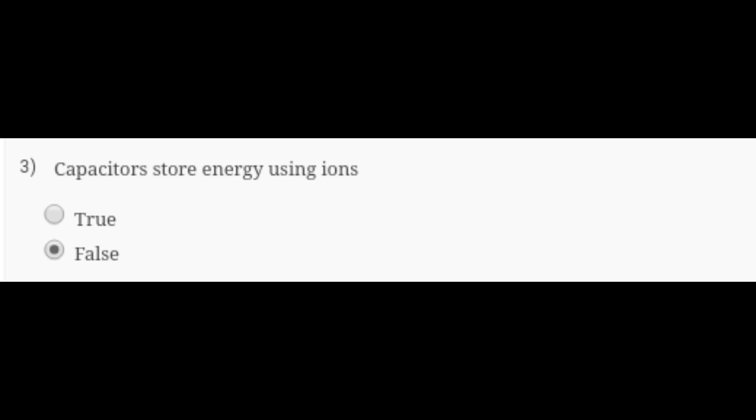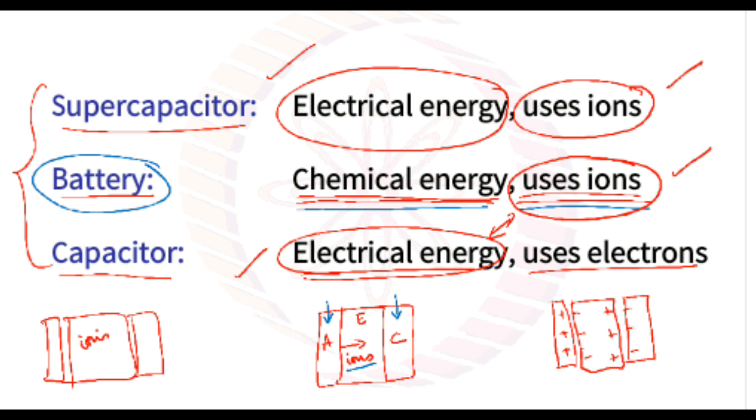Now taking the third question: capacitors store energy using ions. It is absolutely false. You can see the proof from this picture. In the last line it is written capacitor uses electrical energy and it uses electrons not ions. So answer is false.